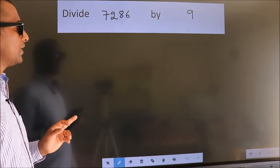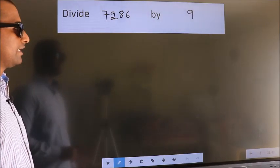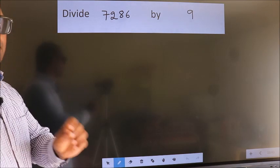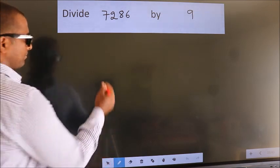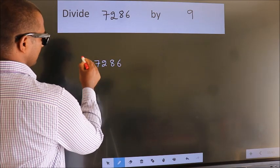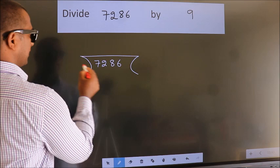Divide 7286 by 9. To do this division, we should frame it in this way: 7286 here, 9 here.